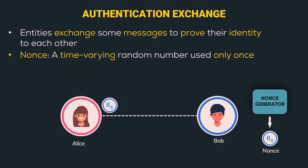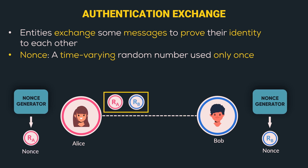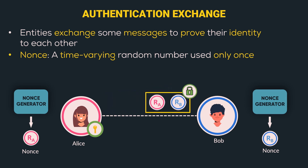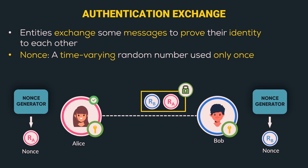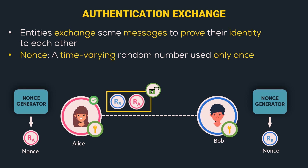After receiving Bob's nonce, Alice generates her own nonce, denoted by RA. Alice prepends her nonce after Bob's nonce, encrypts the message using her secret key, and sends it to Bob. Bob uses his secret key to decrypt the message. Since the nonce is the same one he had sent, Alice is now authenticated. Bob then shuffles the messages so that RB is ahead of RA, encrypts it, and sends it to Alice. Alice decrypts it and verifies the nonce, and with this, Bob is also authenticated. By exchanging these messages, Alice and Bob have authenticated each other.